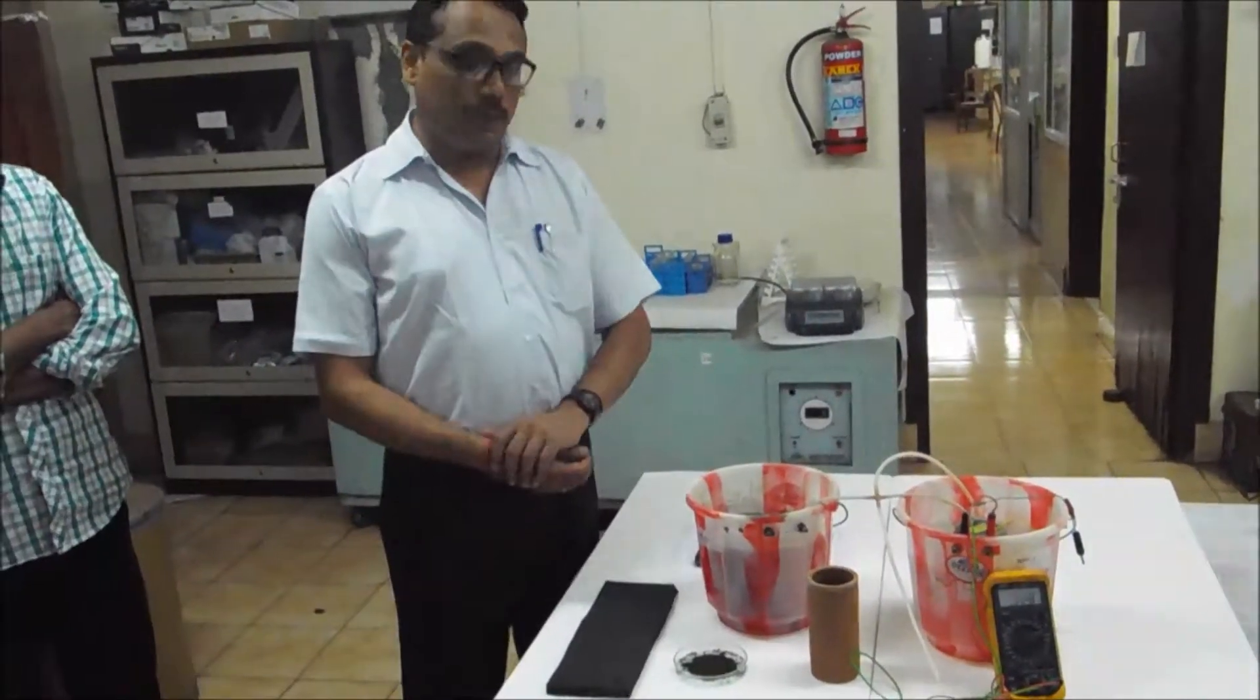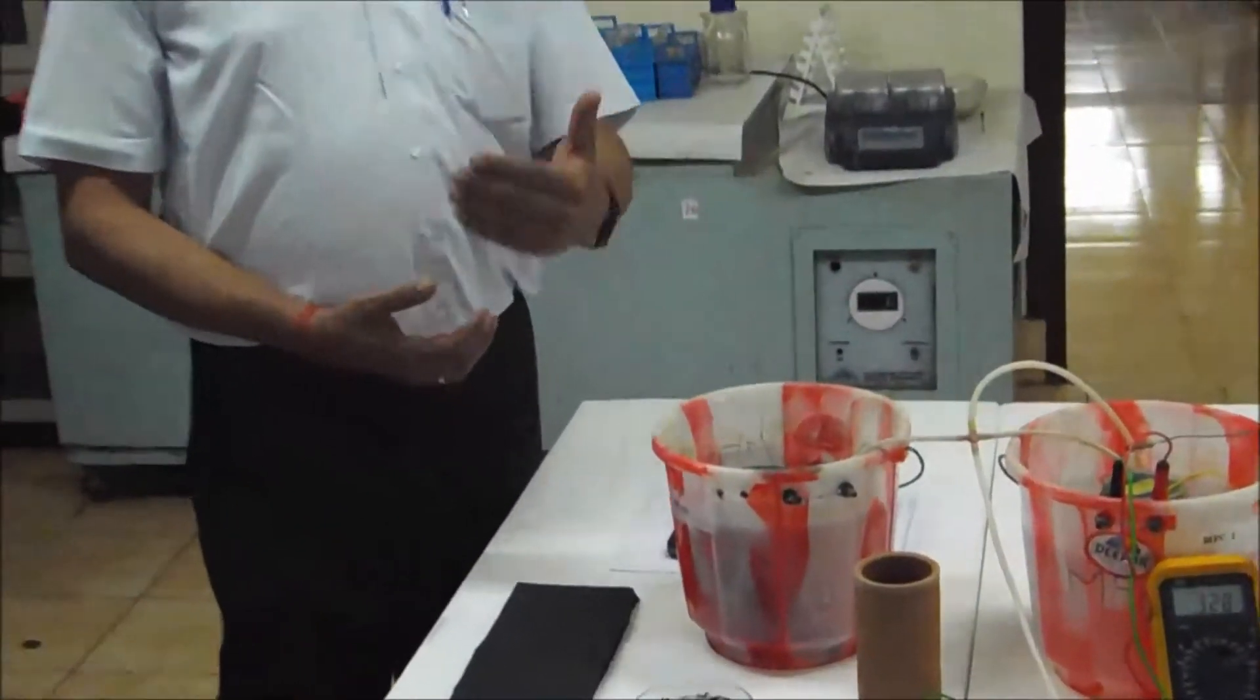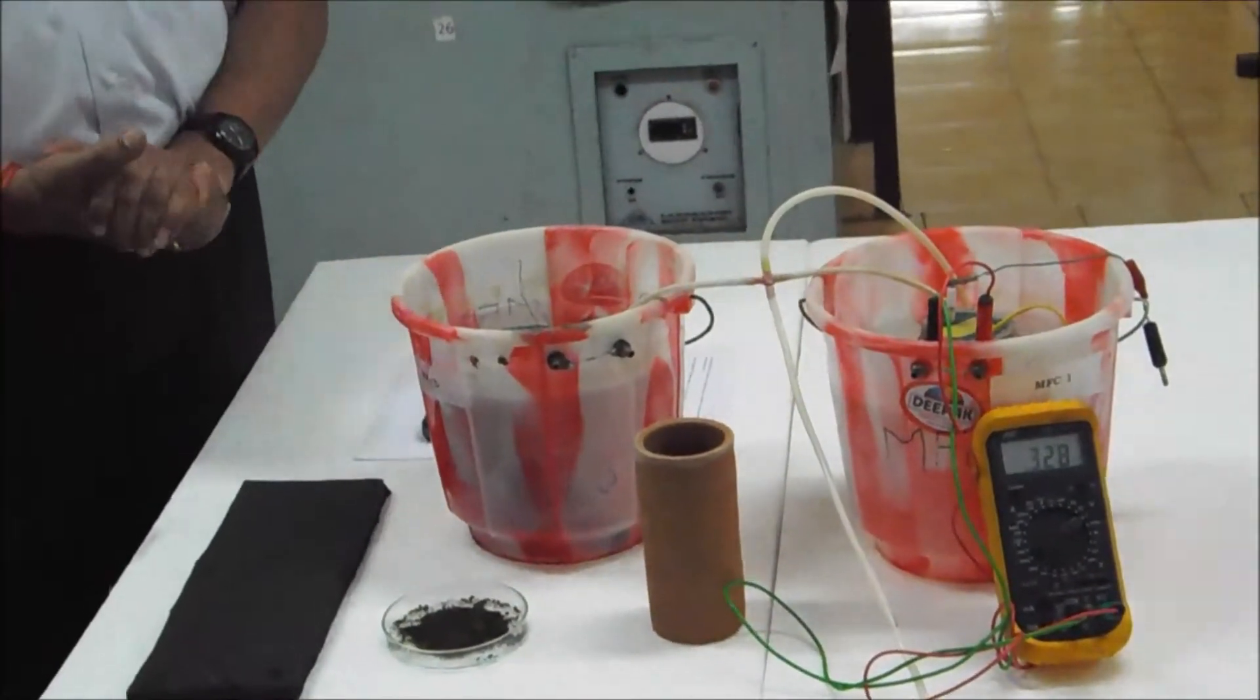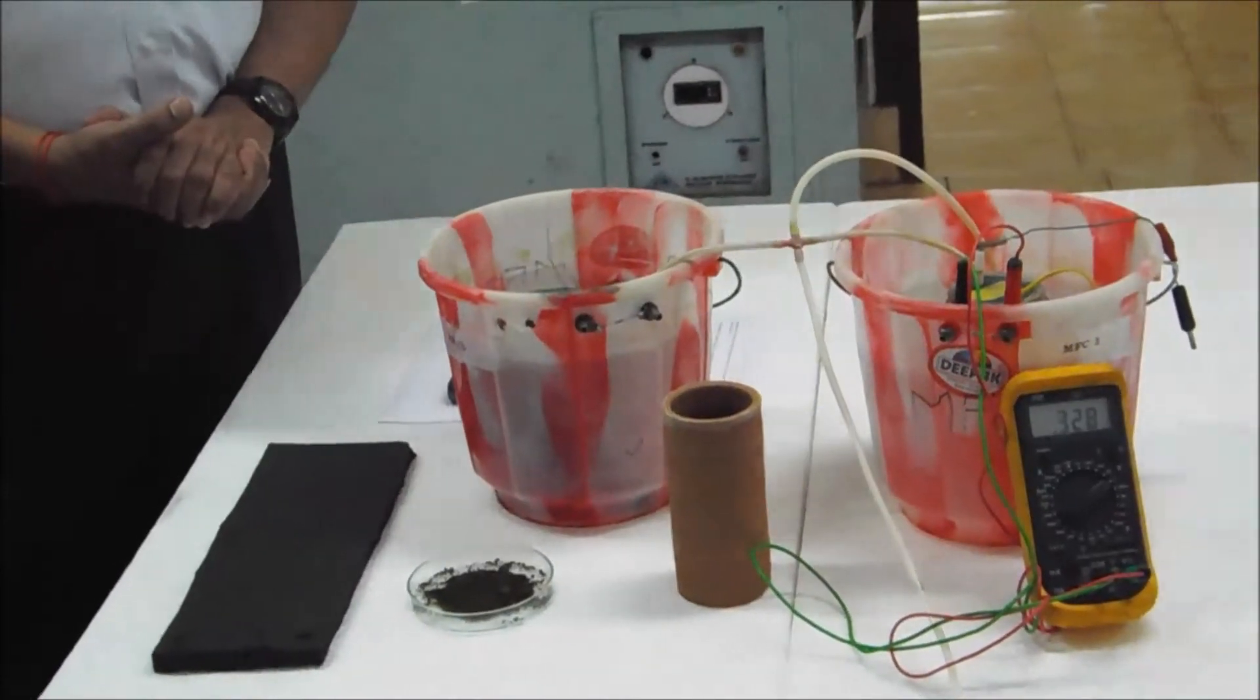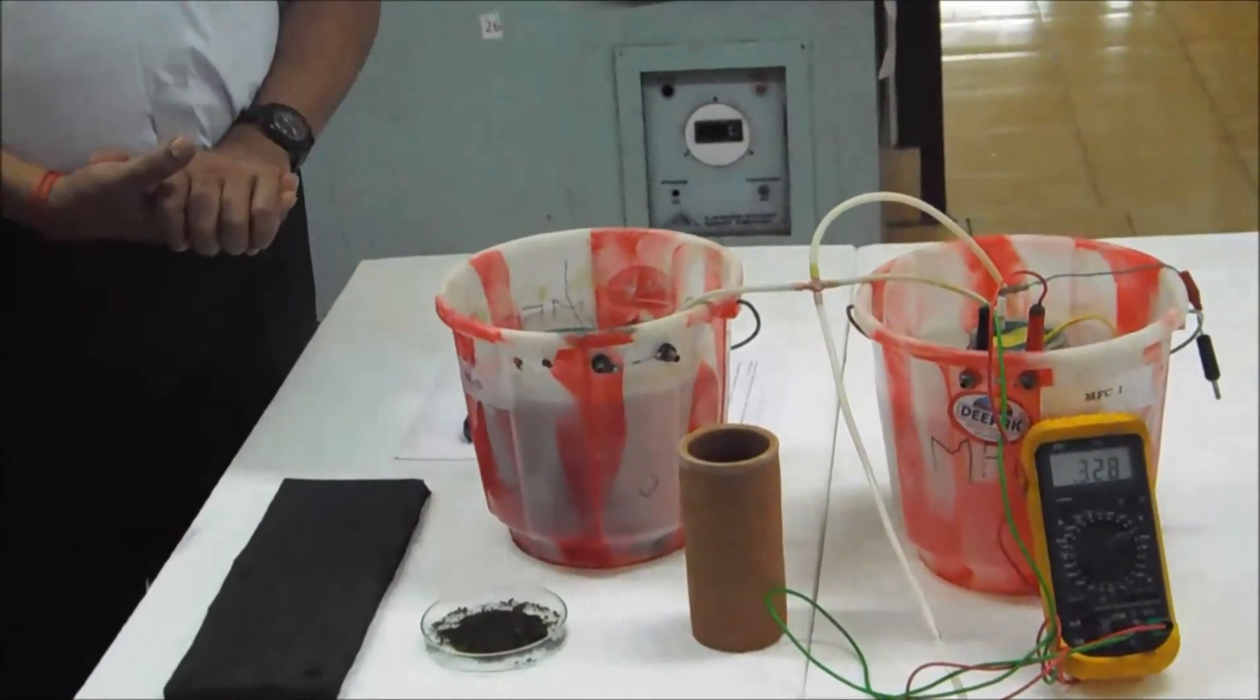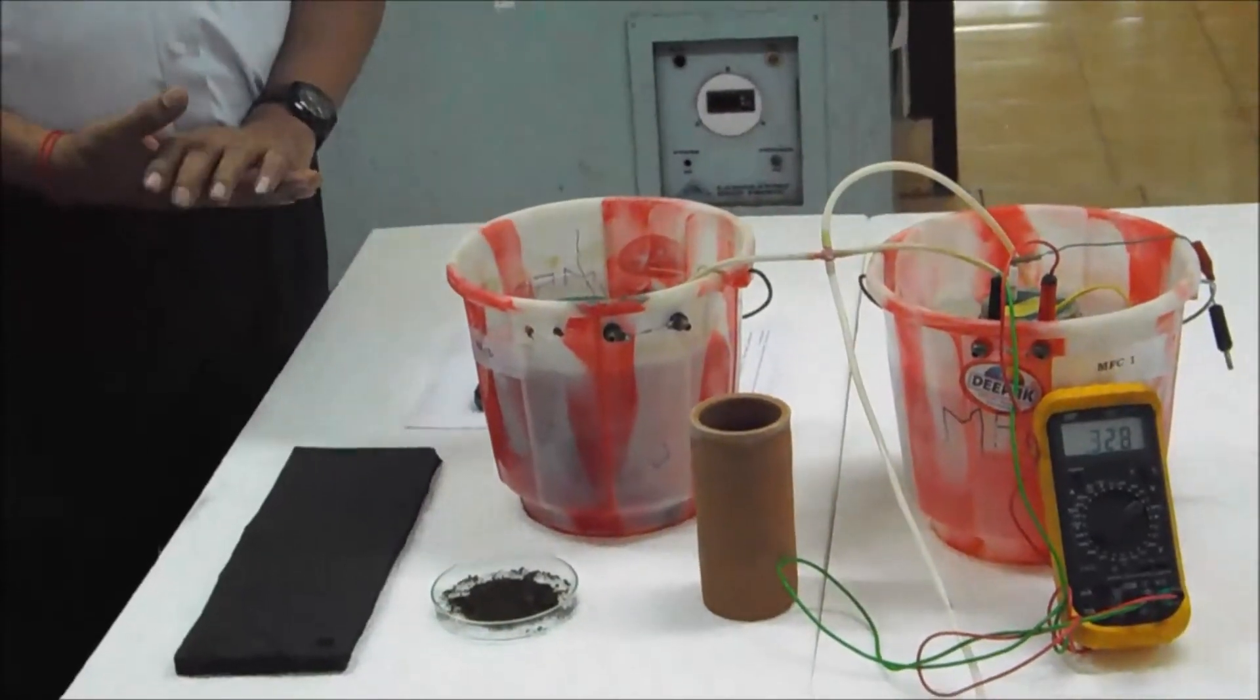The microbial fuel cell consists of an anodic chamber and a cathodic chamber. In anode, the substrate, that is the waste that we add, is supplied. And the oxidation occurs. During the oxidation process, electrons and protons are generated. The electrons reduce anode.